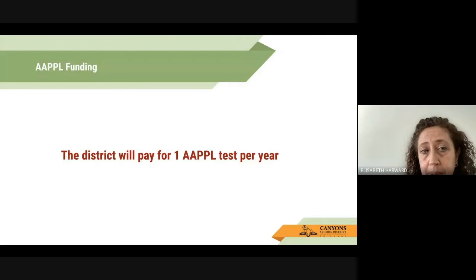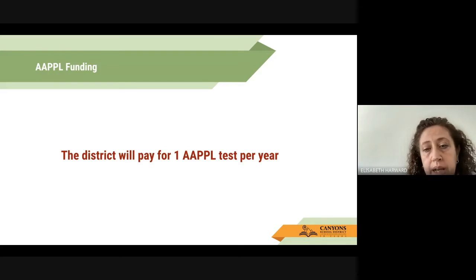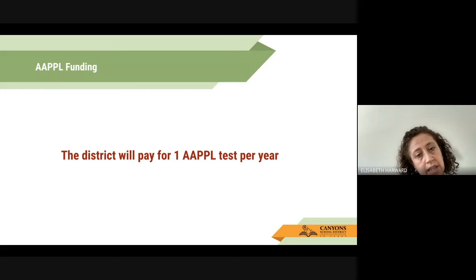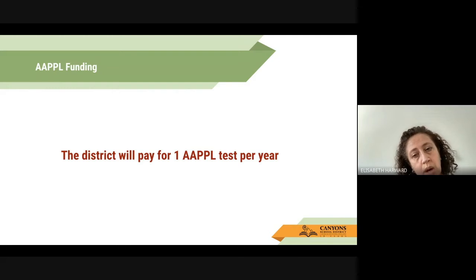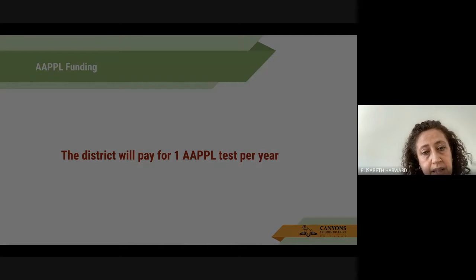The funding for the Seal of Biliteracy is completely free to students, and the district will pay for one AAPPL test per year. This is why it is important that if students start testing in their junior year, they can use one AAPPL test as a junior and one in their senior year if needed — they cannot do two AAPPL tests in one year. So they need to plan in advance.